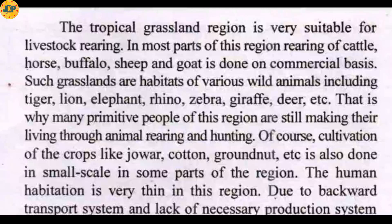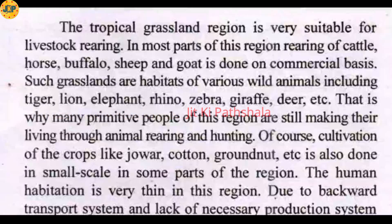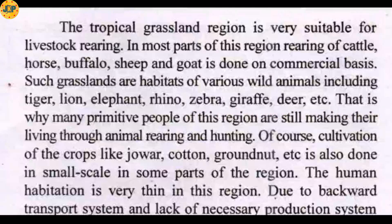The tropical grassland region is very suitable for livestock rearing. Due to the abundance of grass, livestock rearing is common here. In most parts of this region, rearing of cattle, horse, buffalo, sheep, and goat is done on a commercial basis — not just for home use but also to supply to the market.